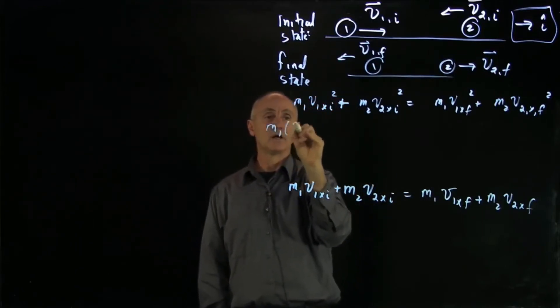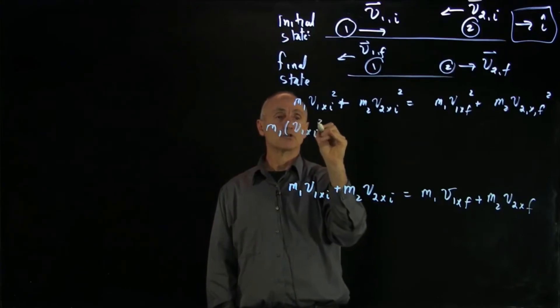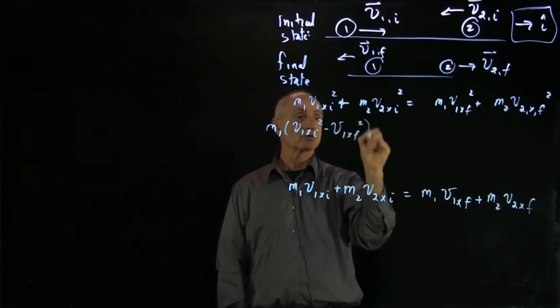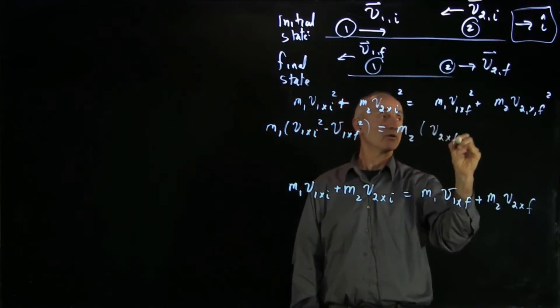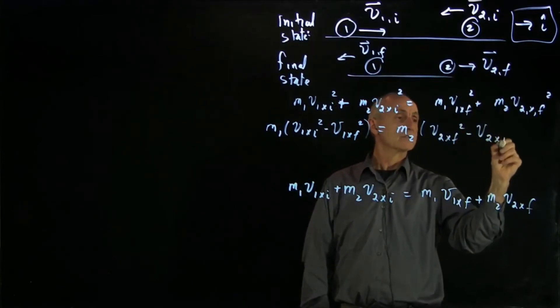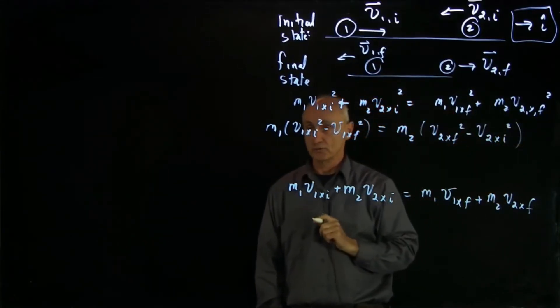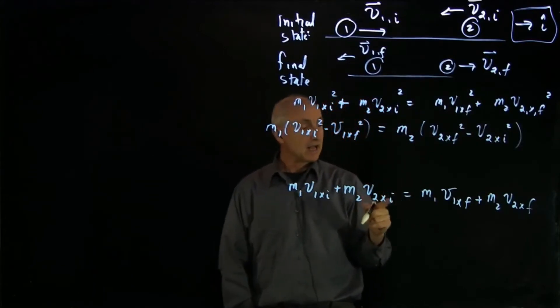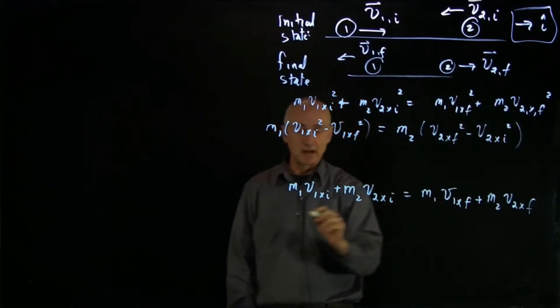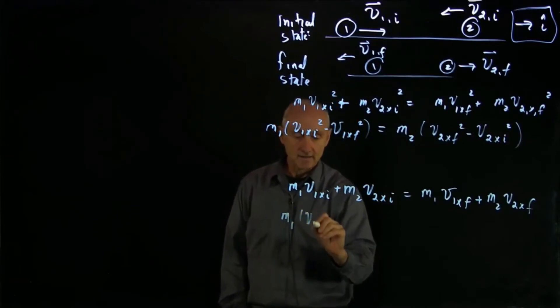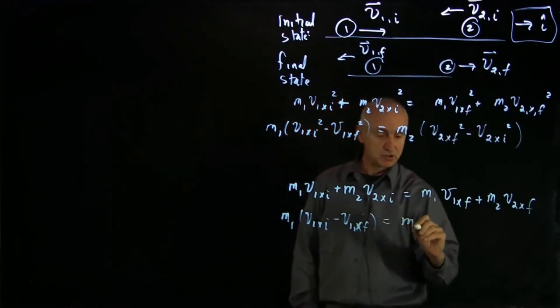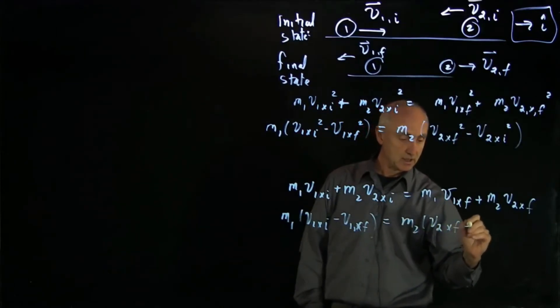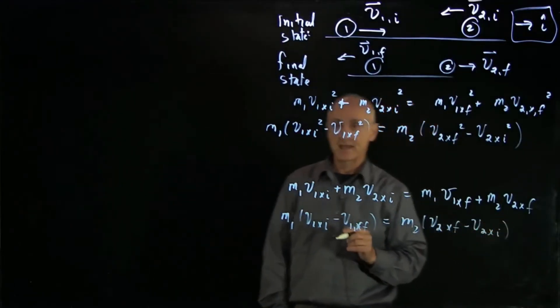I have M1 v1 x initial squared minus v1 x final squared. And that's equal to M2 v2 x final squared minus v2 x initial squared. So I've just brought those terms over to the other side. Now, likewise, I'll do the same thing down here. I have M1 v1 x initial minus v1 x final. And that's equal to M2 v2 x final minus v2 x initial.